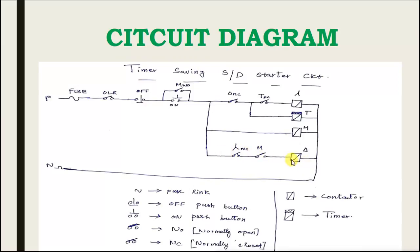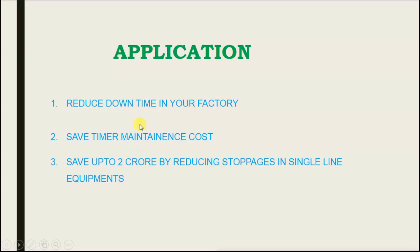Whether you have a delta contactor — if you press delta, which way you need delta — you will have to fix your body. So this is the modification, so we can save the timer. So if you try this diagram, that will benefit. Then see here — downtime, stoppage, timer, maintenance circuit diagram tension.